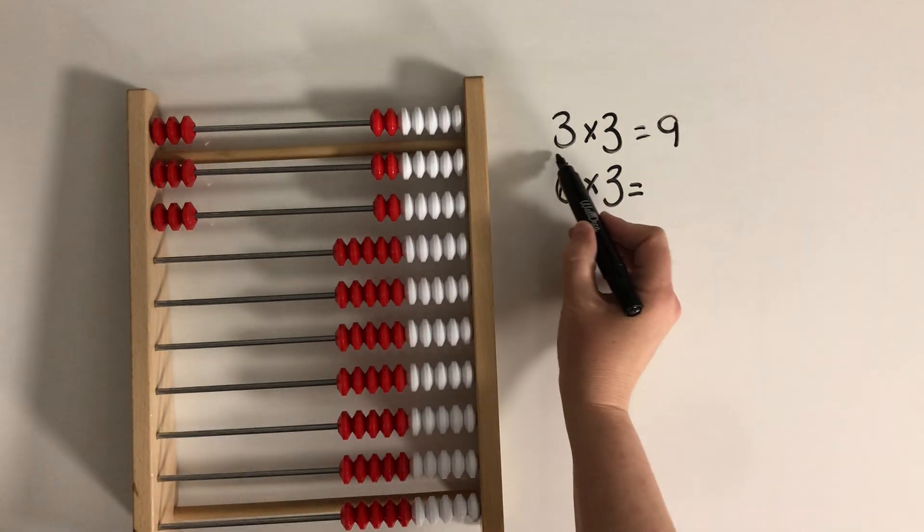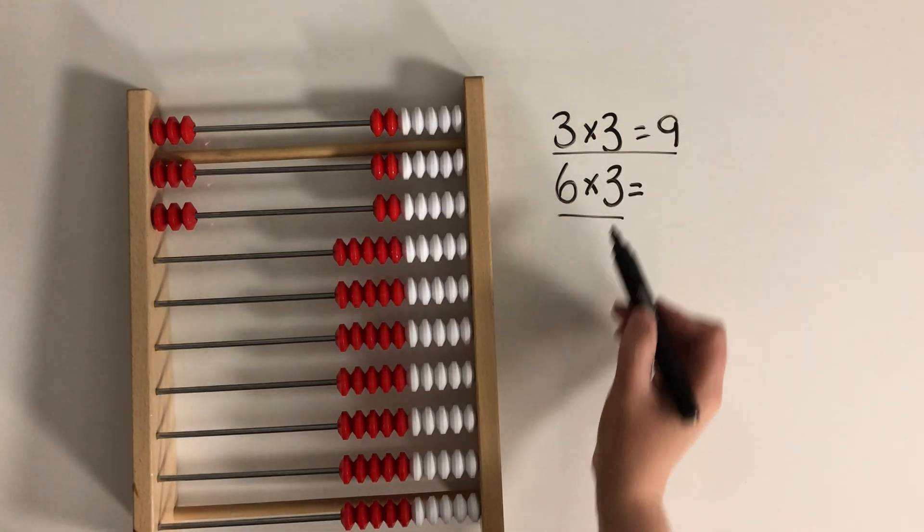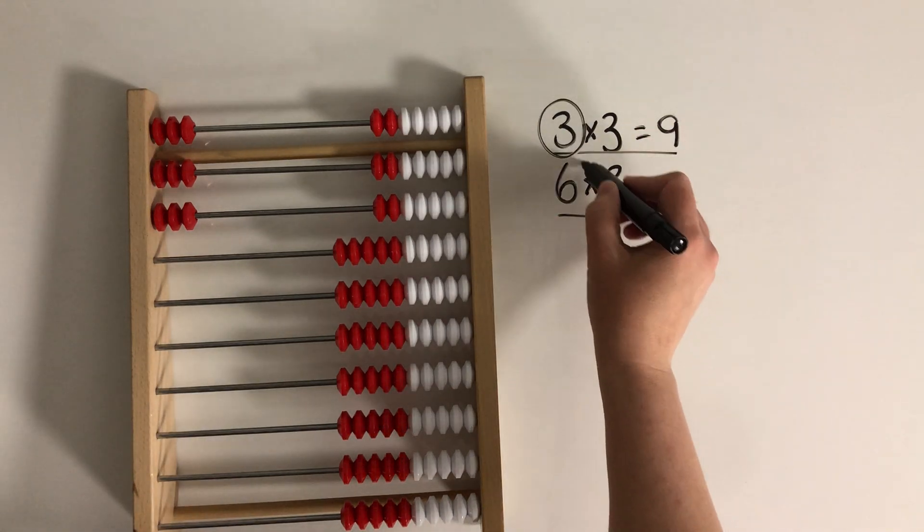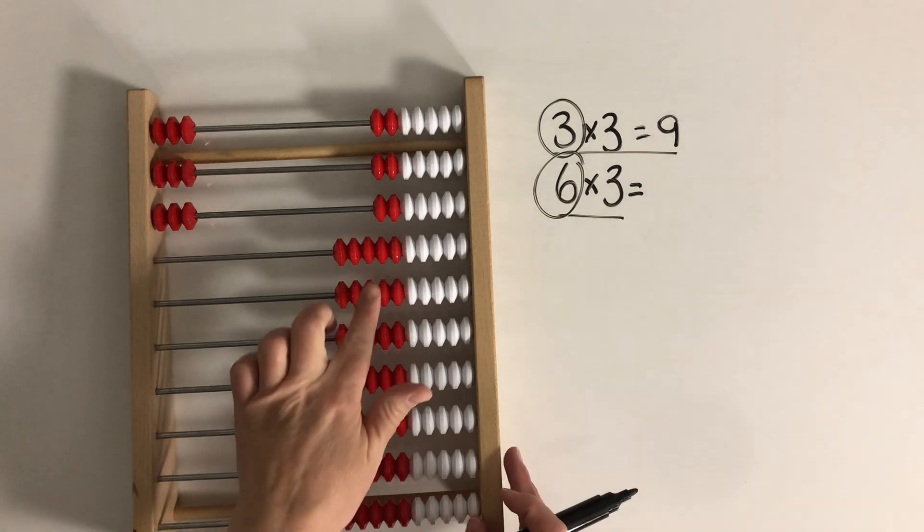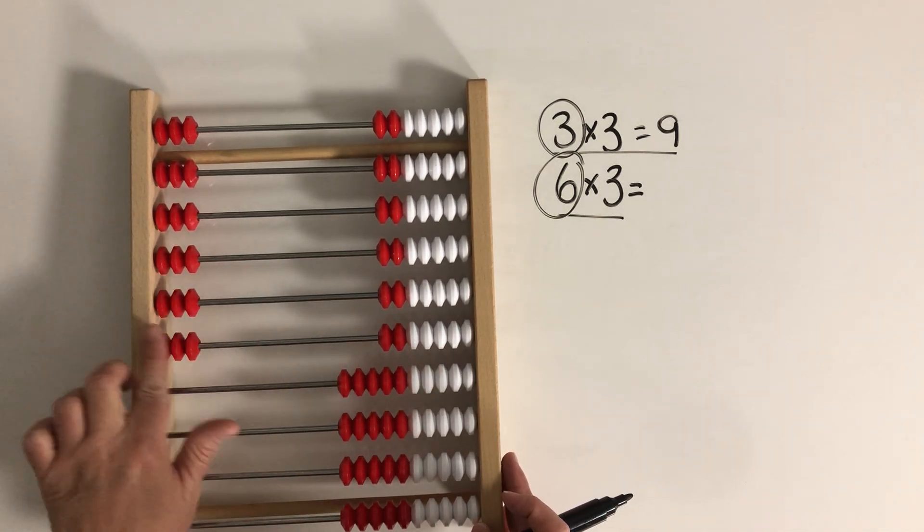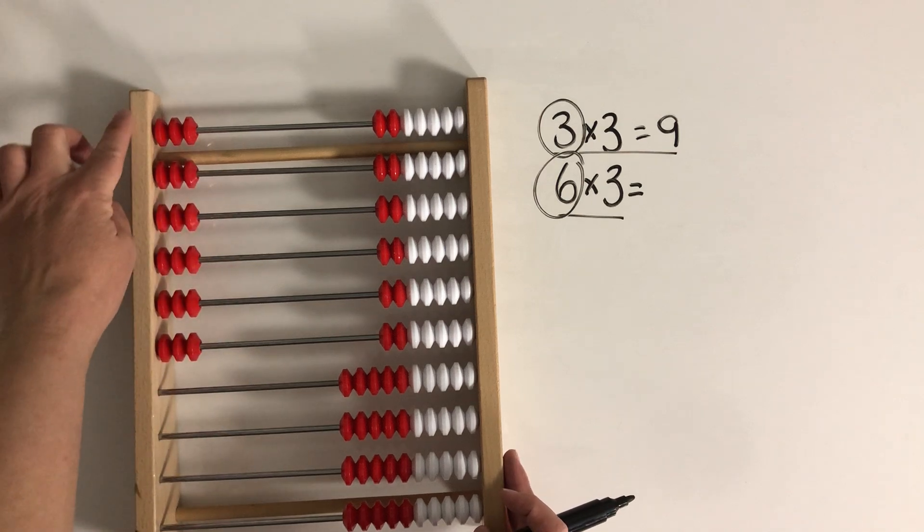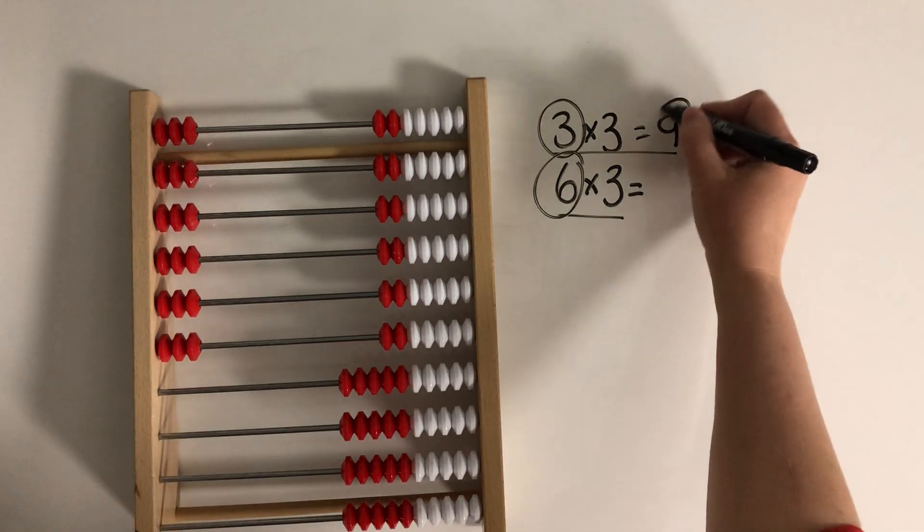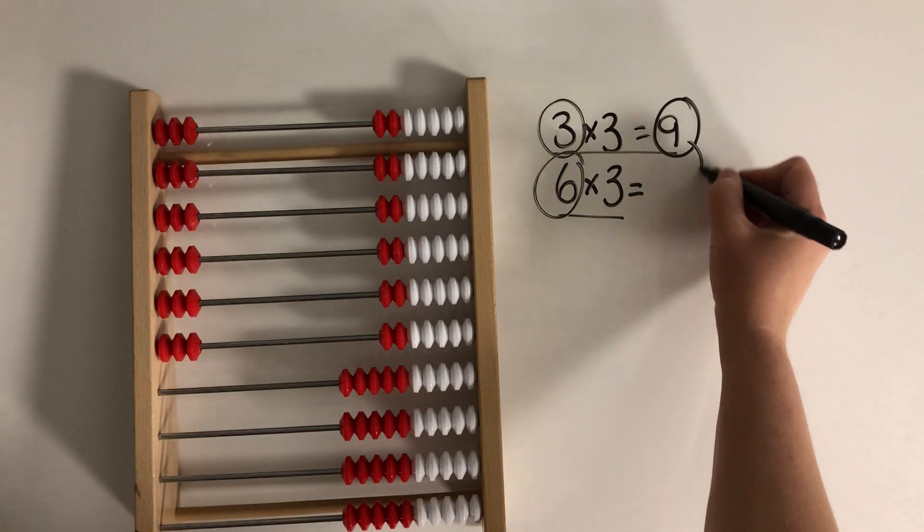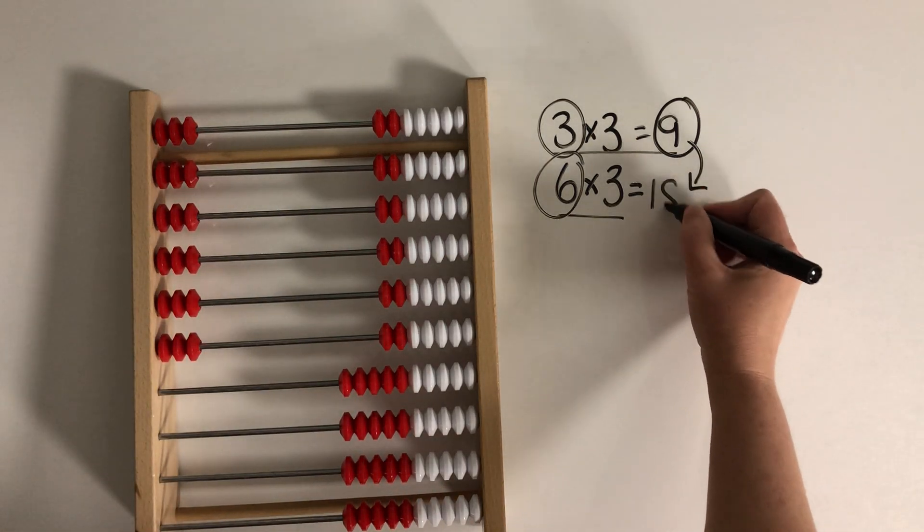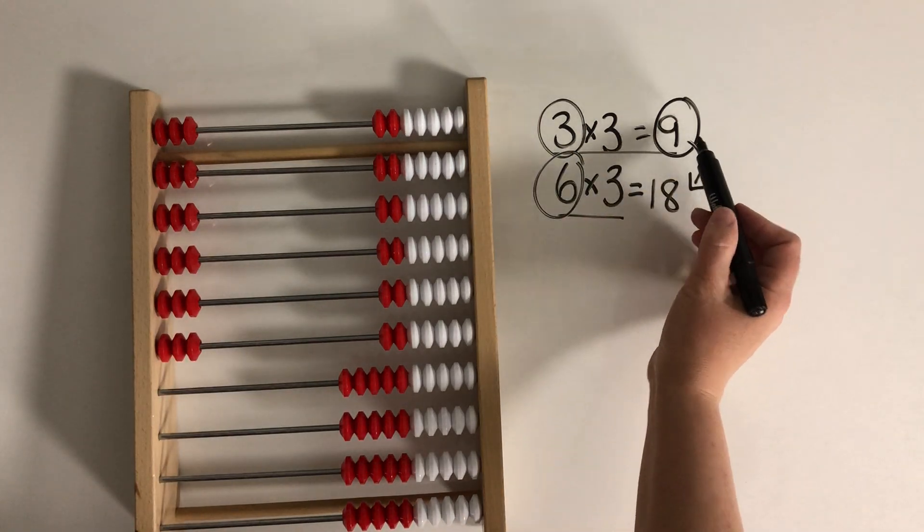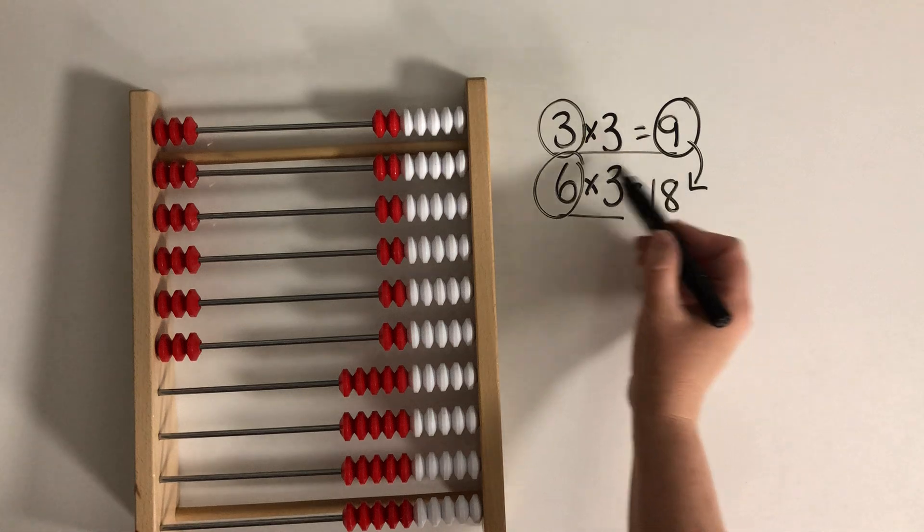So how could we use this to solve this? What are we doing to our groups? We had 3 groups, but we want 6 groups. So we are doubling the groups. And if we doubled the number of groups, we doubled the number of objects, didn't we? We doubled the number of beads. So what's the double of 9? 18. So you can see that 3 times 3 is half of 6 times 3.